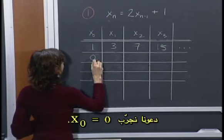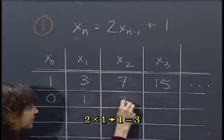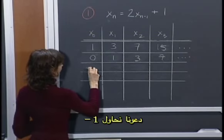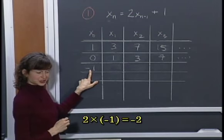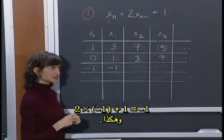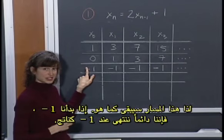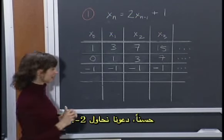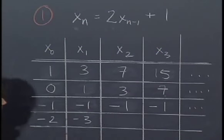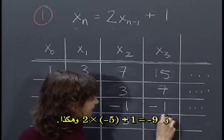Let's try another initial condition: x0 equals 0. Then 2 times 0 plus 1 gives us 1, then 3, then 7, and so on. What about x0 equals minus 1? Well, 2 times minus 1 is minus 2, and if we add 1 we get minus 1 back again. So this trajectory always stays at minus 1. Let's try minus 2: 2 times minus 2 plus 1 gives minus 3, then minus 5, then minus 9, and so on.